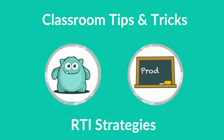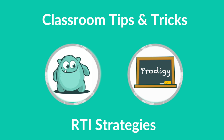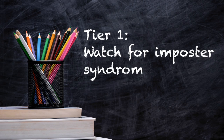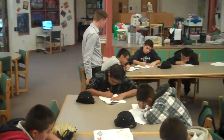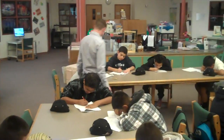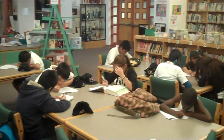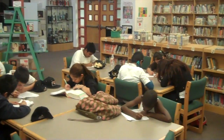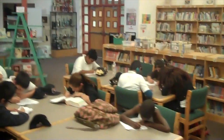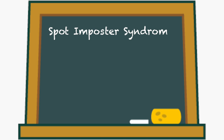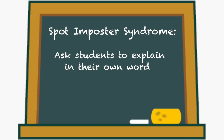Here are a few teacher intervention strategies to empower students. Tier one: watch for imposter syndrome. Proactively look for students who feign understanding — usually these are students who nod their heads and keep their faces buried in books, seldom actively participating. You can spot imposter syndrome by regularly asking students to explain concepts in their own words and by using exit tickets.